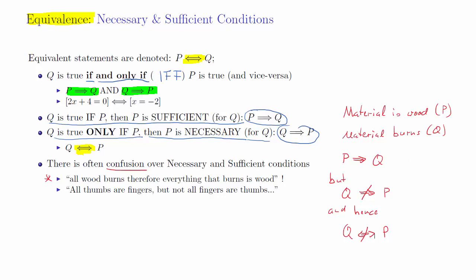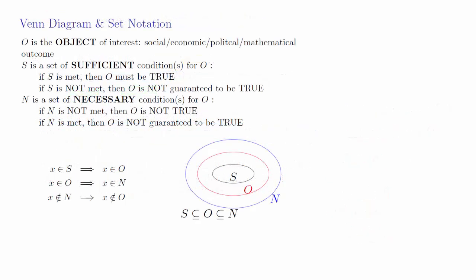Now let's use these concepts to talk about sets. Sets are collections of objects or outcomes of particular interest — you can think of sociological, economic, political, or mathematical outcomes. Usually we use numbers, but we'll apply a practical life example. We call O our object or outcome of interest.